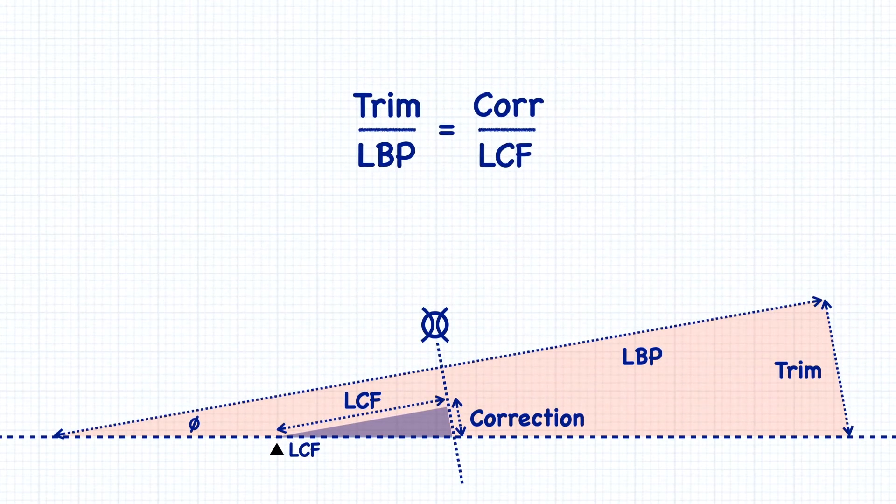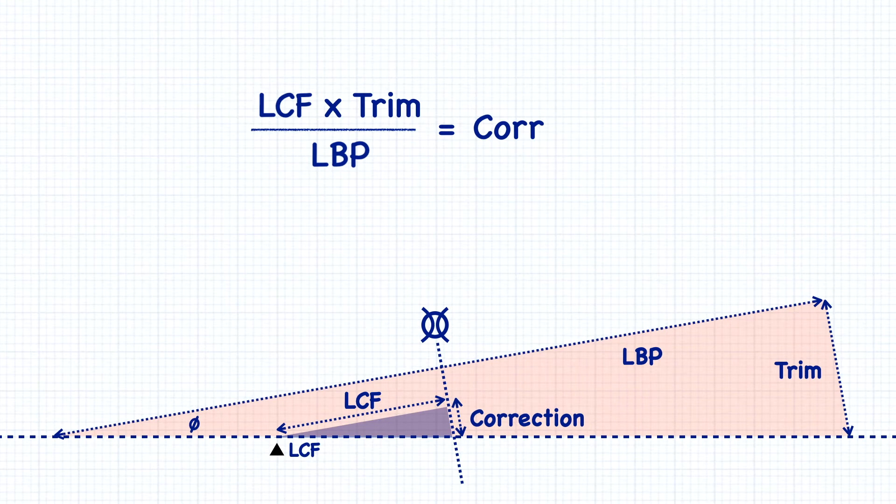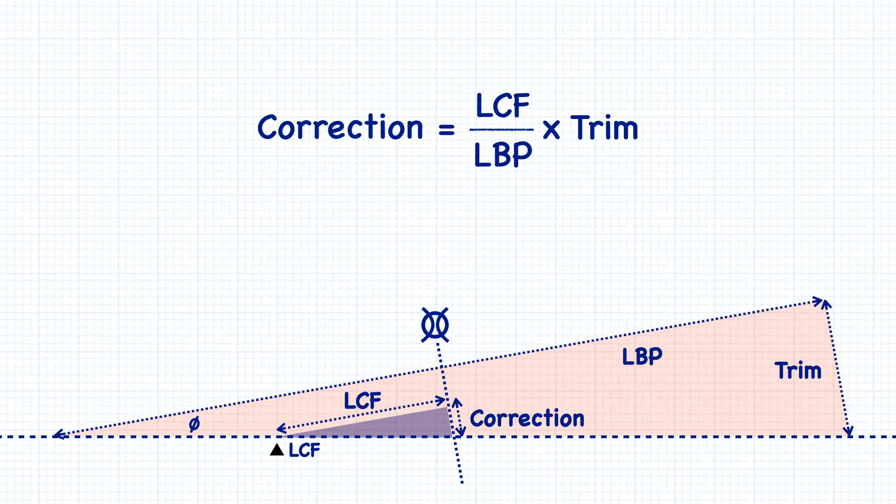If we want to figure out the correction, we can rearrange these proportions into a formula. Now the correction equals the center of flotation from midships divided by the length between perpendiculars times the trim.